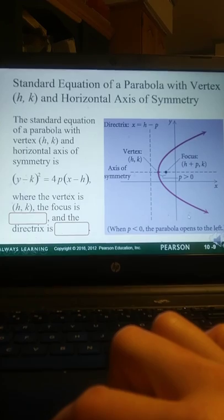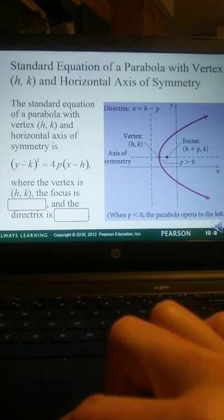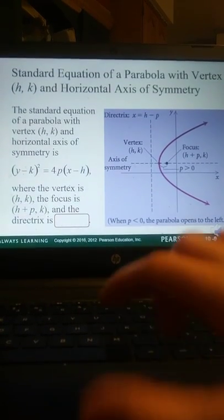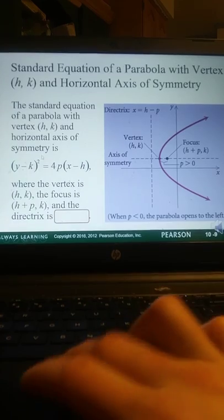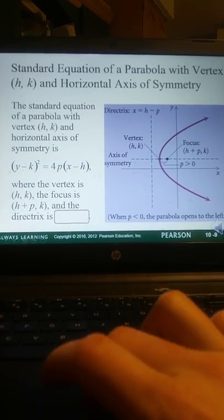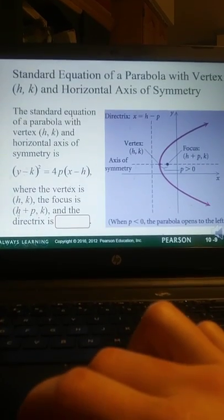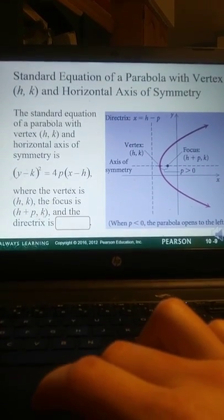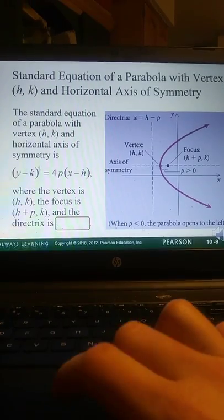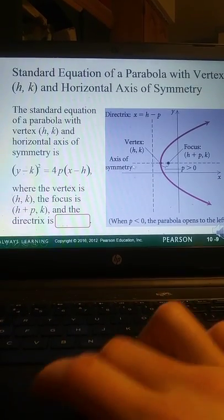If we're symmetric with respect to the horizontal, we have the same thing. Notice how the K and the H followed. So now K is still with Y, H is still with X, but it's kind of switched. But now our focus would be represented by H plus P, and K remains the same, because it's falling on that same axis of symmetry.